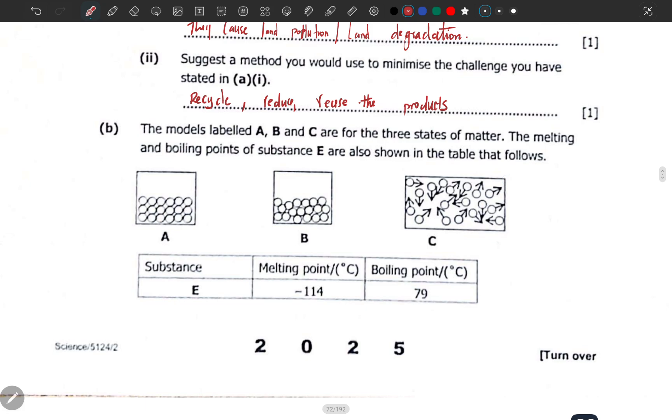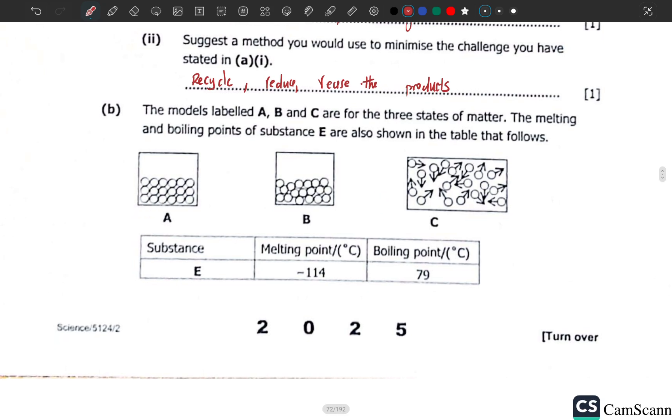Part b says the models labeled A, B, and C are for the three states of matter. The melting and boiling points of substance E are also shown in the table. A, B, C are shown - the states. They have substance E whose melting and boiling points are shown.